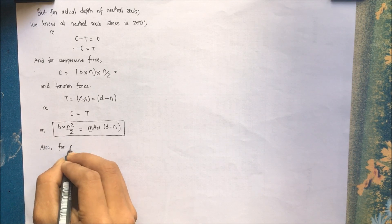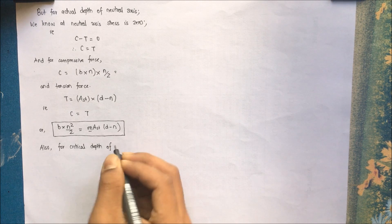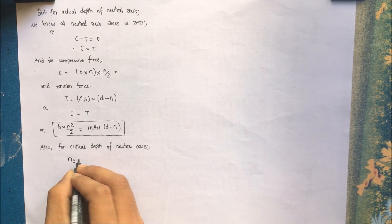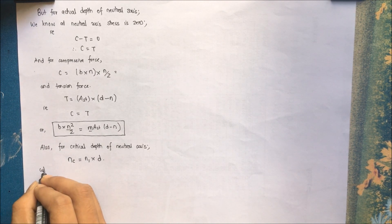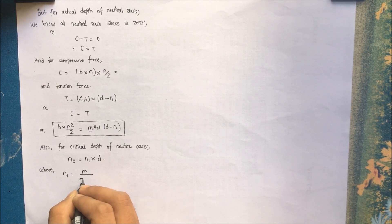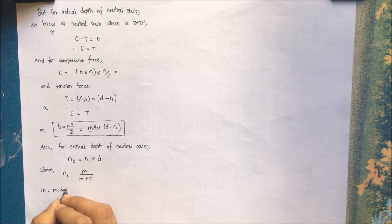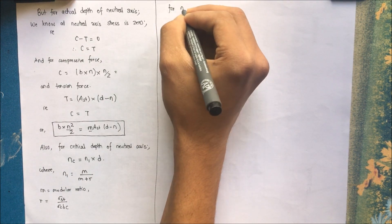For the critical depth of neutral axis NC, we have NC equal to N-dash times D, where N-dash is computed using the formula M divided by (M plus R), where M is the modular ratio and R is the ratio Sigma ST divided by Sigma CBC.